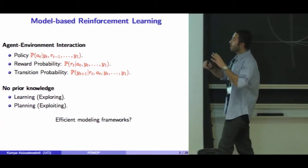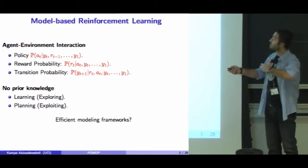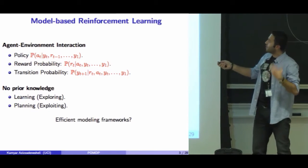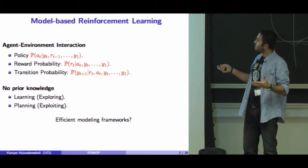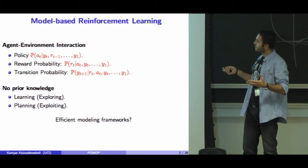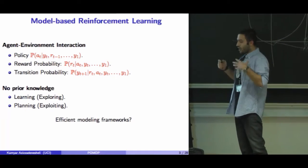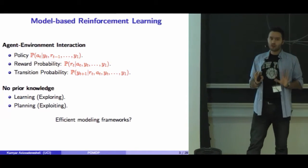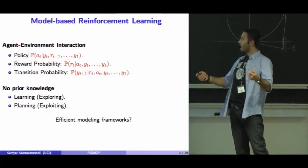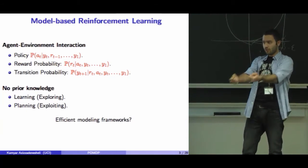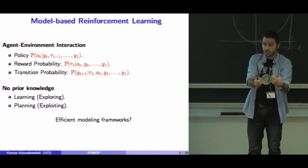At each time step, the agent chooses some action based on what happened in previous time steps. Based on this action, the environment provides some reward and some observation. In reinforcement learning, we do not have any prior knowledge about the environment, so we need to explore the environment. Based on this exploration, we learn something, and based on what we've learned, we exploit this information and do the planning.